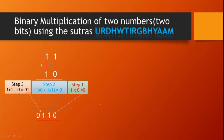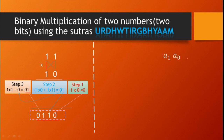Now we go for a generalized approach. We consider number A with bits A0 and A1, and another number B with bits B0 and B1. So A is a 2-bit number multiplied with B, another 2-bit number. We again follow the same sutra, Urdhva Tiryakbham.